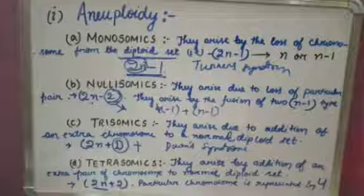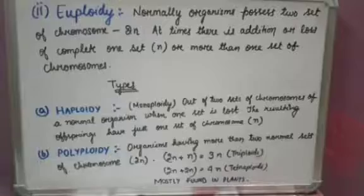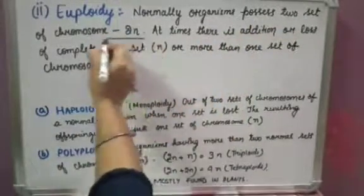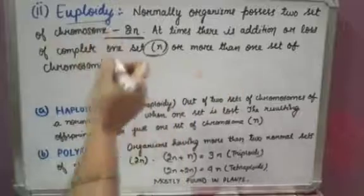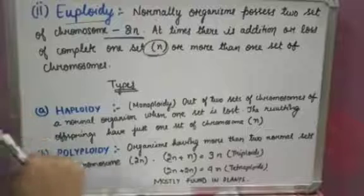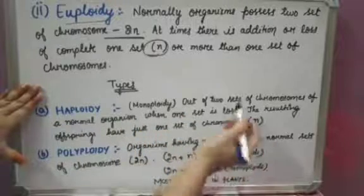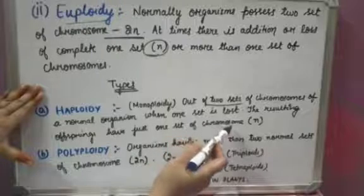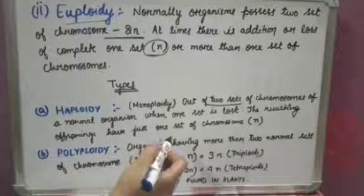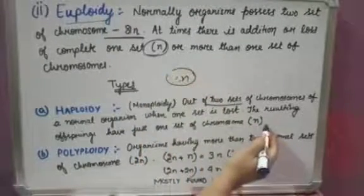The second type of variation in chromosome number is euploidy. Normally, organisms possess two sets of chromosomes, but in euploidy there is an addition or loss of a complete set. Euploidy has two types: haploidy and polyploidy. In haploidy — also known as monoploidy — one complete set is lost from the normal 2n, leaving only n.